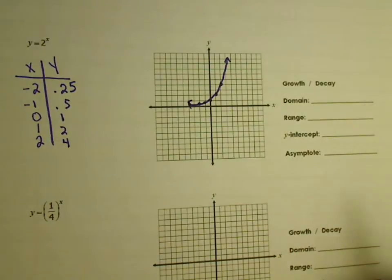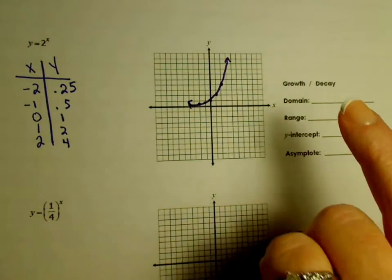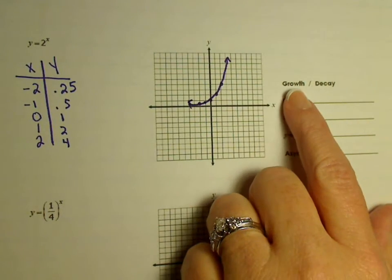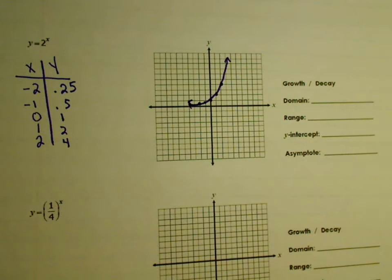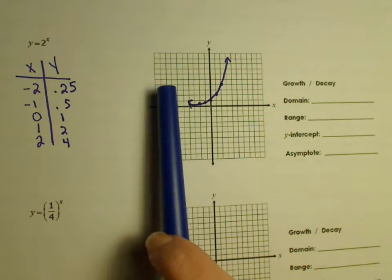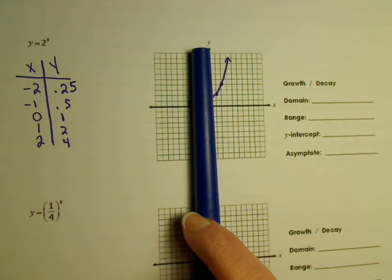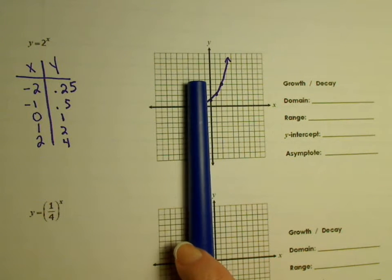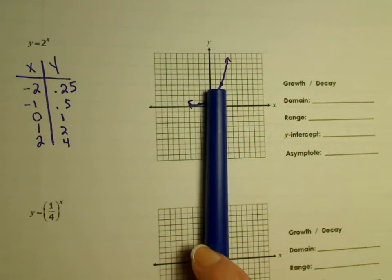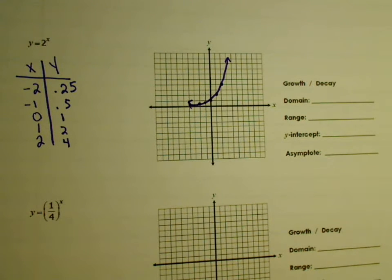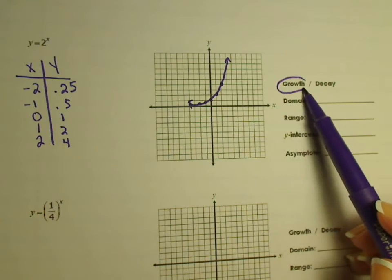So basically we have something that looks like this. Now we're going to come over here and discuss what these mean. First of all, we need to pick either growth or decay. If you read this from left to right, just like you read in the English language, it's going up — starting down here and going up. So if it's going up from left to right, that is called growth.